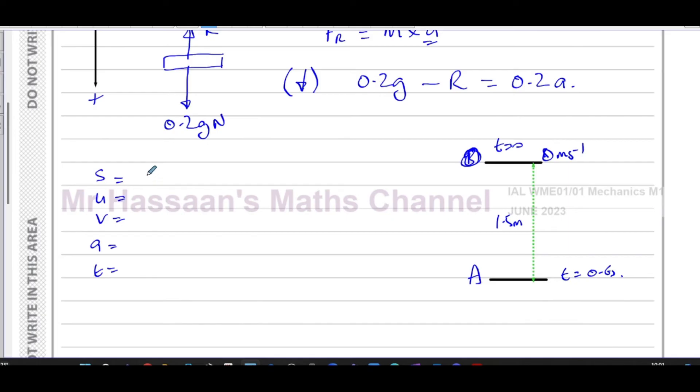So here we know S, and I'm going to take again down as positive as it's going to be moving downwards. S is equal to positive 1.5. U is equal to zero. V, we don't know. A, we have to find. And T is 0.6. So in this case, we've got to deal with S and U and T because we know them and we want to find A, so we'll deal with A.